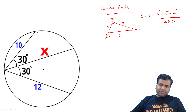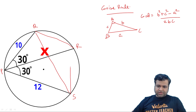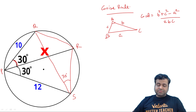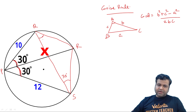Now let's apply this here. We have points P, Q, R, and S. We need to join QR, QS, and RS. Now, for the chord QR, the angle at point P is 30 degrees, so the angle at point S for chord QR is also 30 degrees. Similarly, for chord RS, the angle at point P is 30 degrees, so the angle at point Q for chord RS is also 30 degrees.